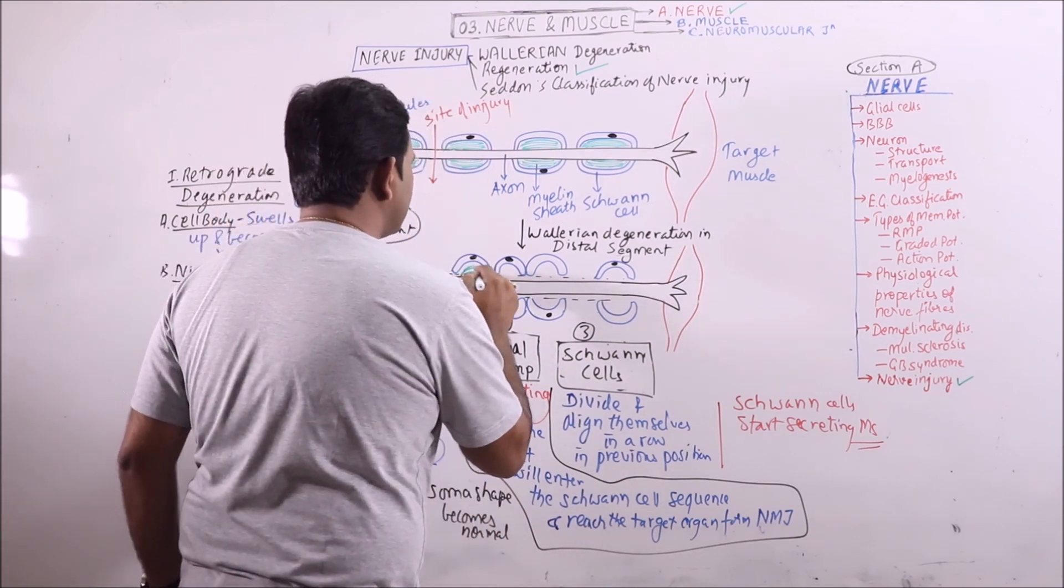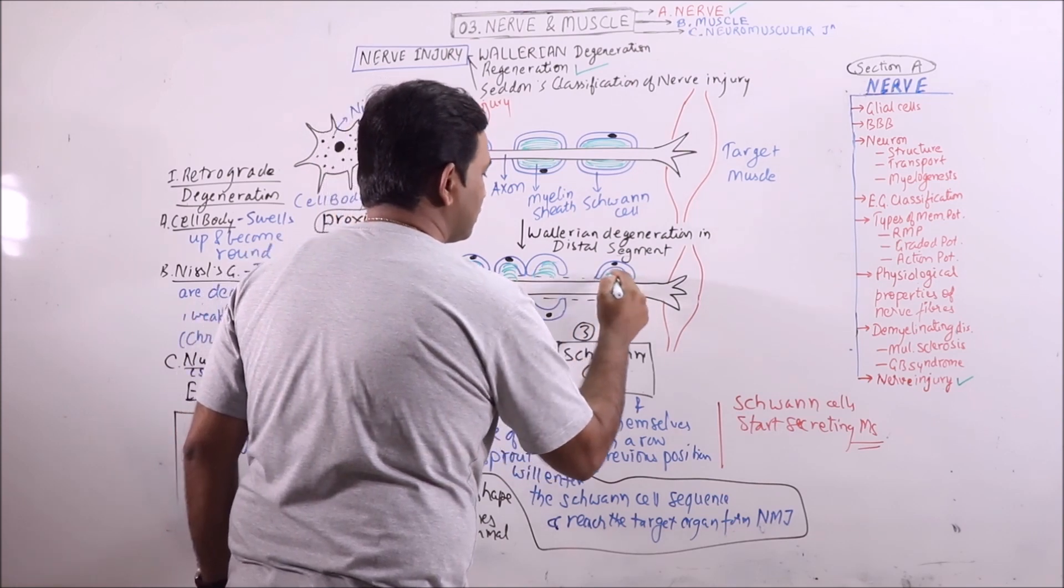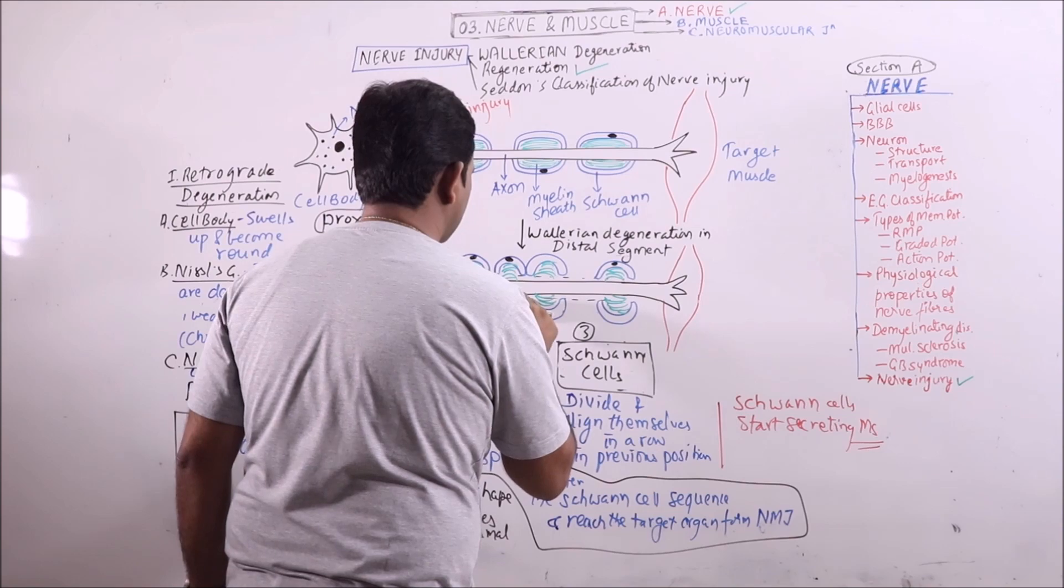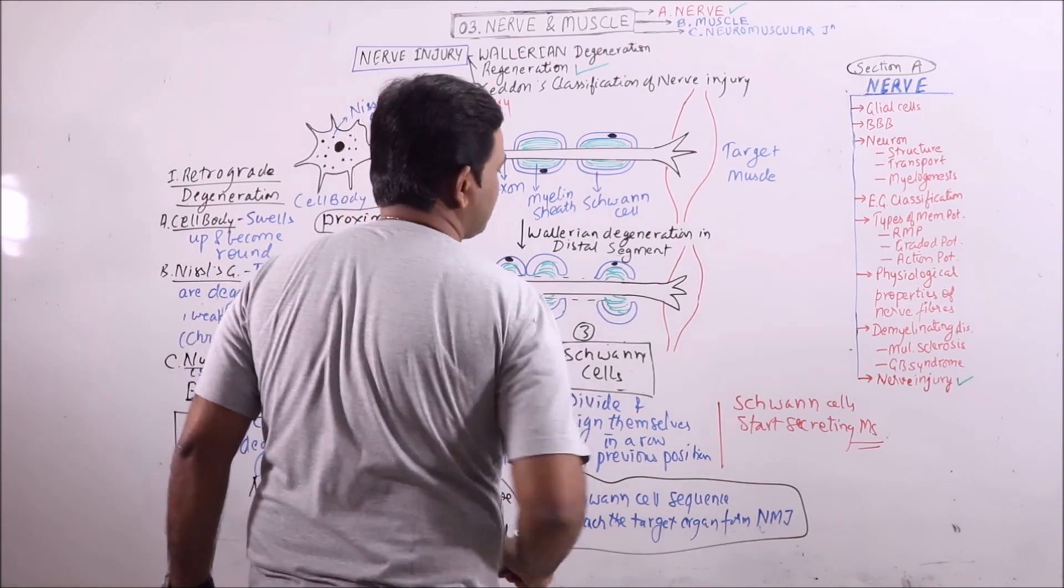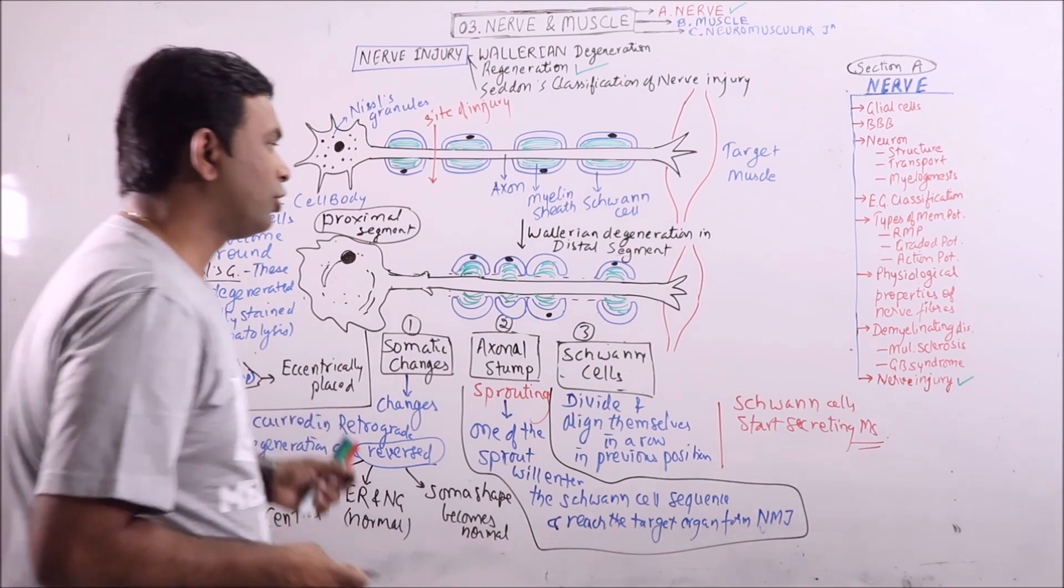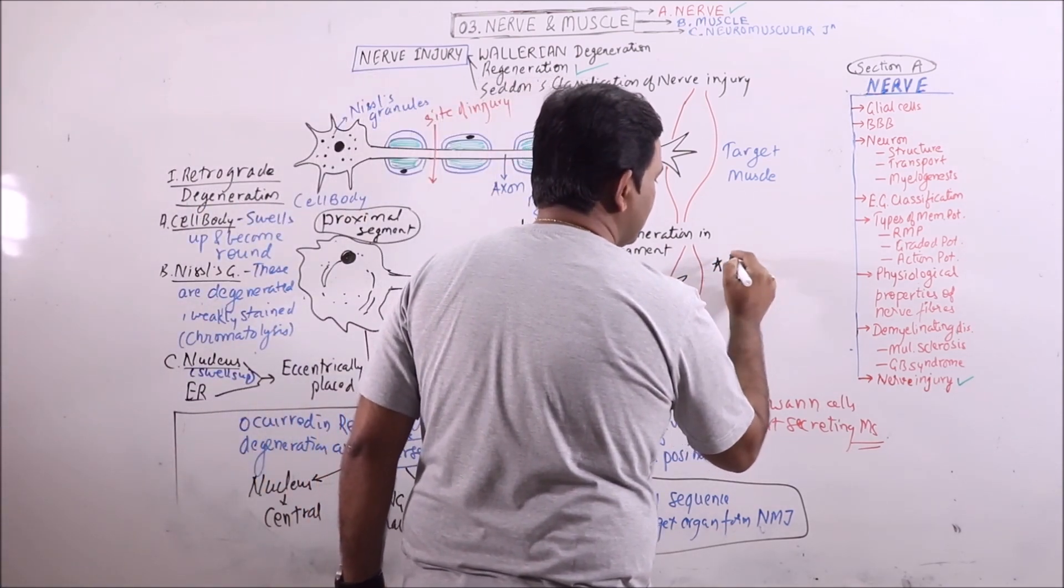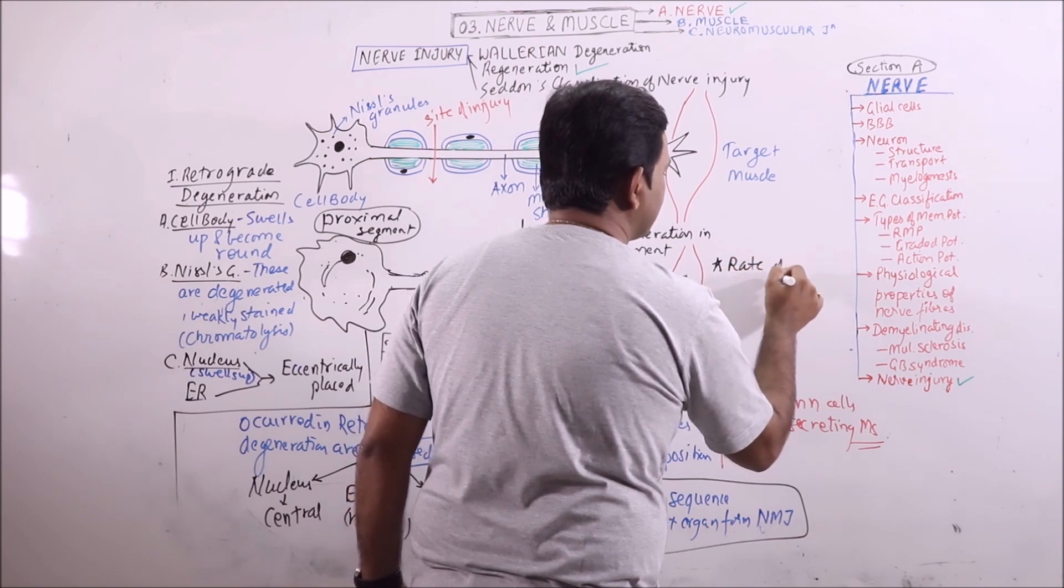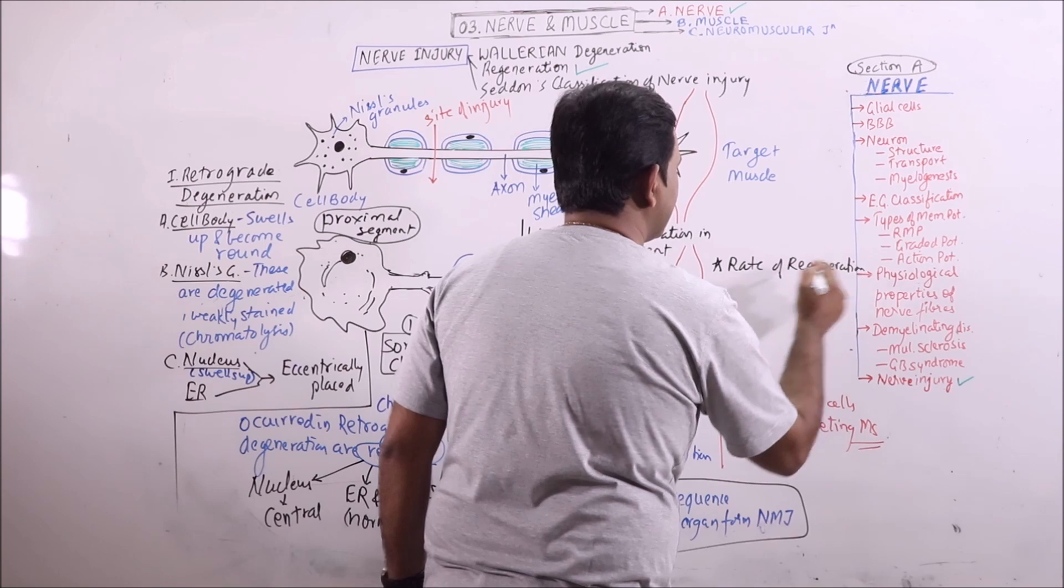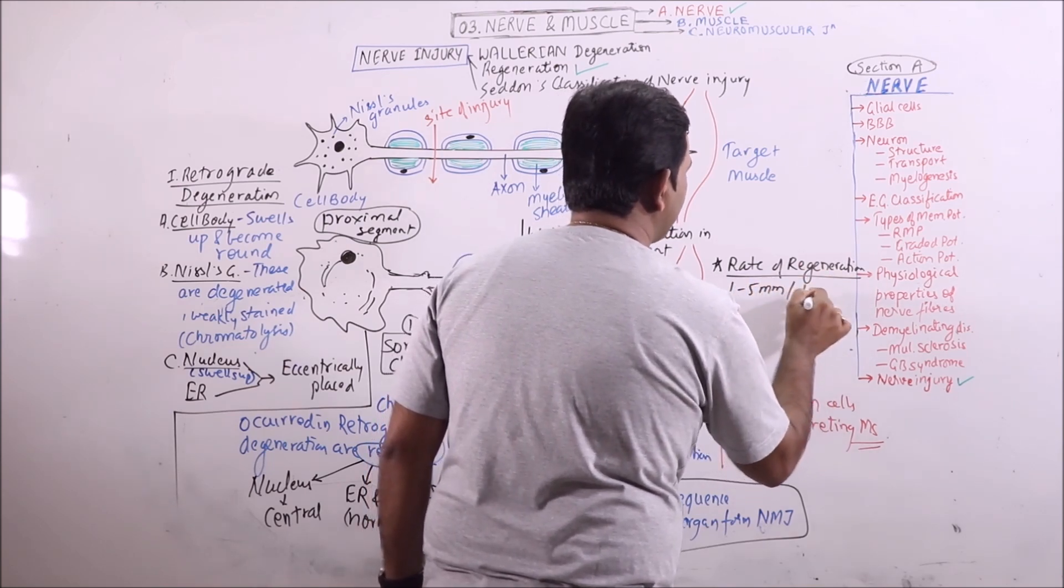Now they will start secreting myelin sheath around it. Thus the regeneration will occur. Two important things that should be discussed are the rate of regeneration. Regeneration basically occurs in PNS and rate varies from 1 to 5 millimeters per day, higher in myelinated neurons and slower in non-myelinated neurons or less myelinated neurons.